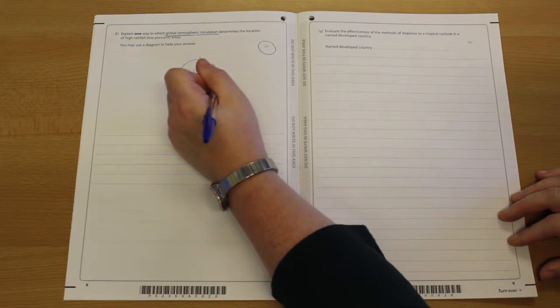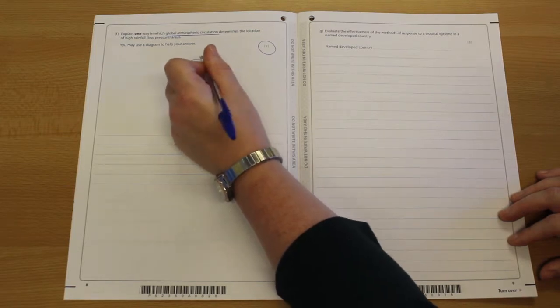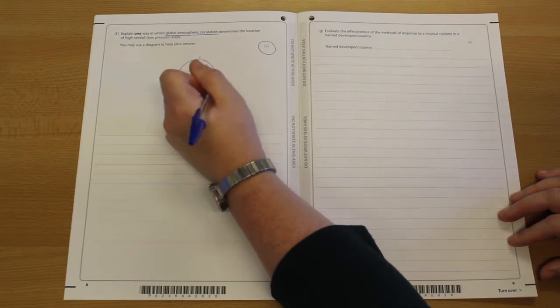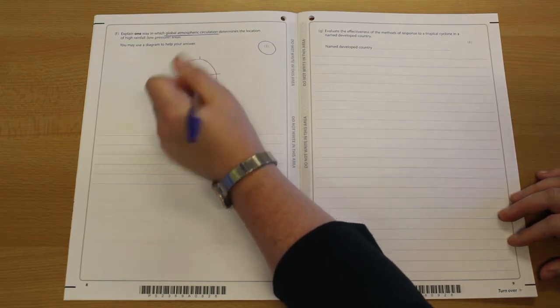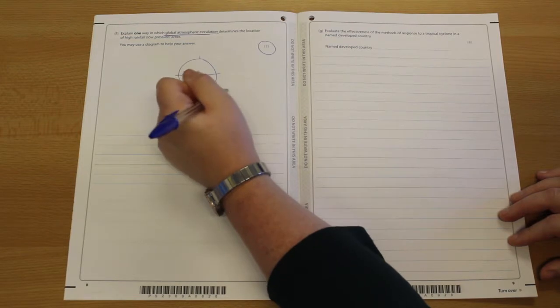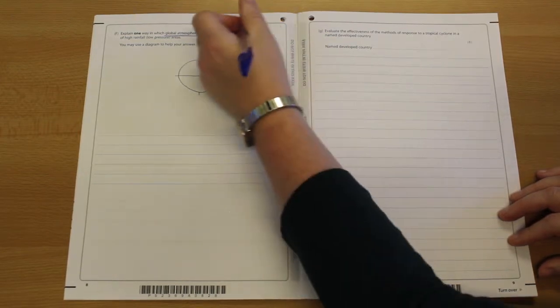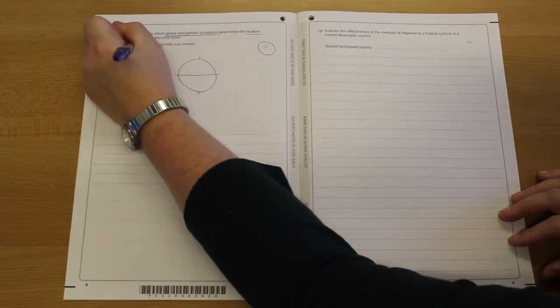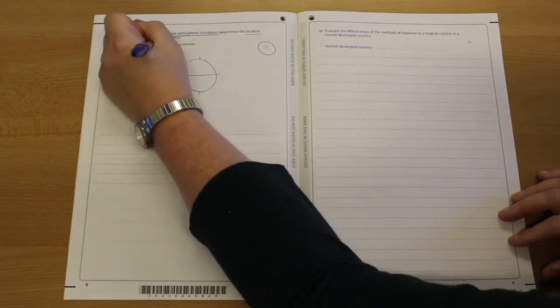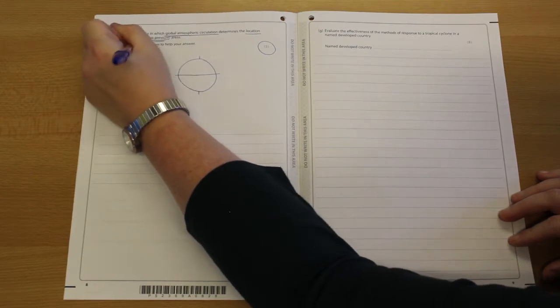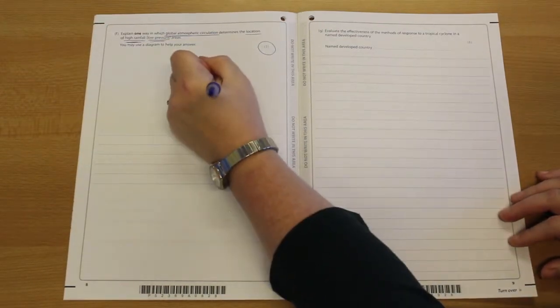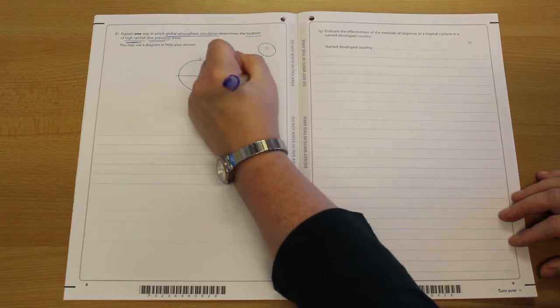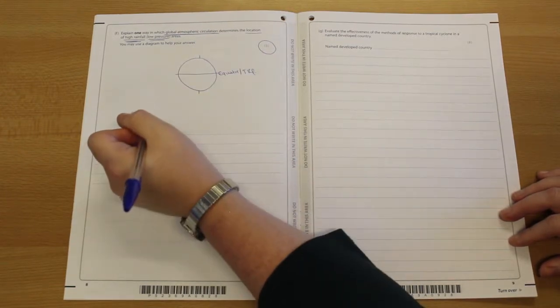The movement of heat away from the equator to the north and south pole via these circulation cells that stops the earth from actually becoming uninhabitable north and south. Think about what you do know in the question: location of high rainfall, low pressure, high rainfall. The highest rainfall is found along the equator. Think tropical rainforest.